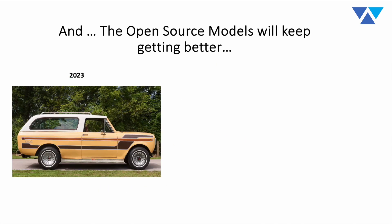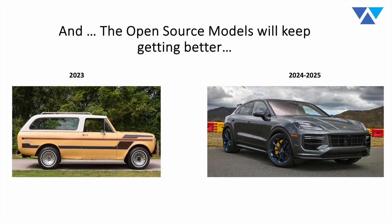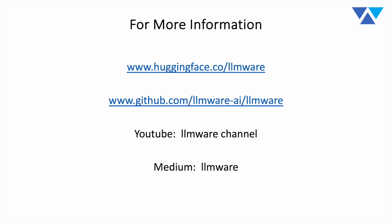Our big takeaway is that models are going to keep getting better. Looking back at 2023, this is what our state-of-the-art open-source SUV might look like. Over the next 12 to 24 months, we think it's going to be a no-compromises, no-trade-off situation — the SUV that's your workhorse integrating into enterprise workflows and automation, but with the speed and performance you'd expect from a sports car. For more information, check us out on Hugging Face at LLMware, our GitHub repo at LLMware-AI, our YouTube channel, or our blog series on Medium.